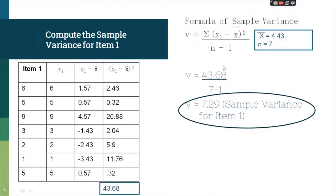Substitute the numbers into the formula. The summation of (X1 minus mean) squared is 43.68, placed over n minus 1, which is 7 minus 1. Performing the calculation gives a variance of 7.29. That is the sample variance for item 1.